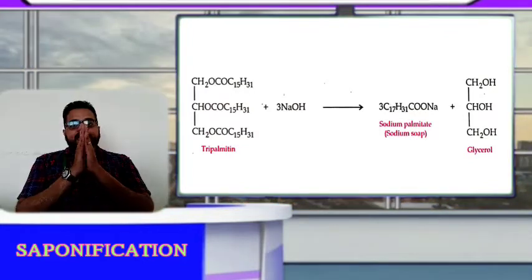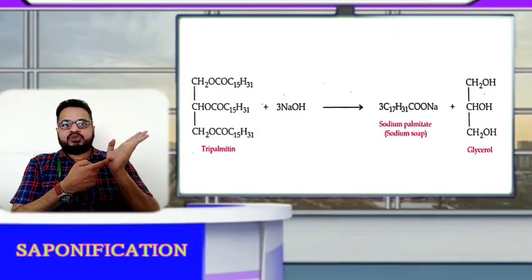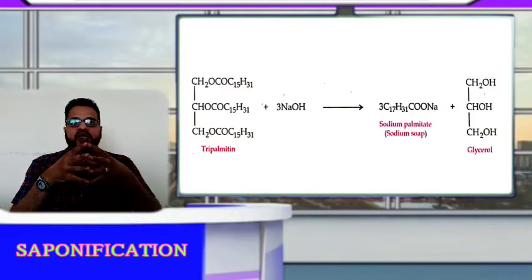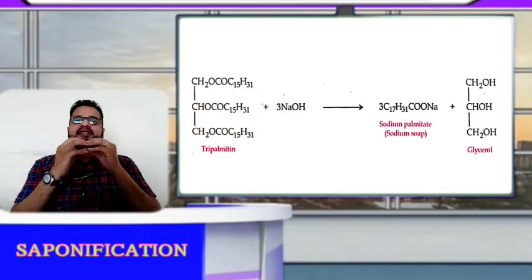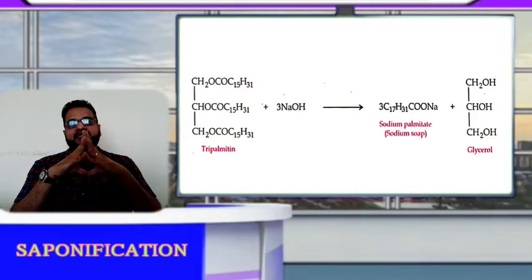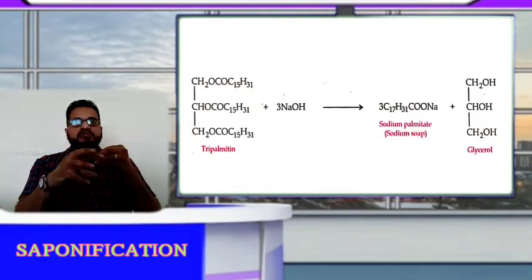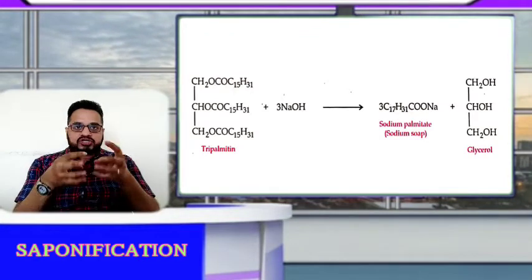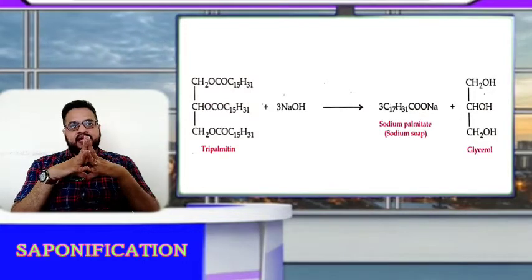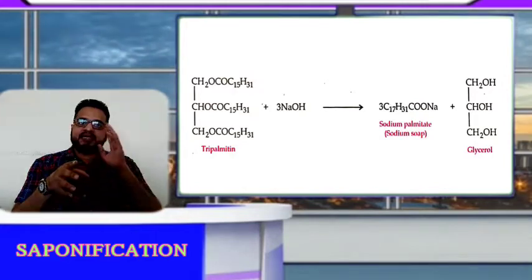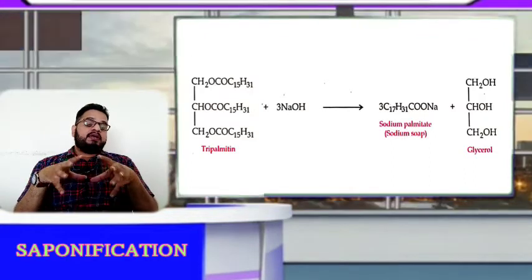When hydrolysis of fats and oils is carried out using alkali like sodium hydroxide (caustic soda) or caustic potash, alkaline salt of the fatty acids known as soaps and glycerol is obtained. This reaction we are calling the saponification reaction. When hydrolysis is carried out using alkalis like caustic soda or caustic potash, the alkaline salt (sodium salt) of fatty acid is obtained - that is known as soap - and glycerol is obtained. This entire reaction is called saponification.